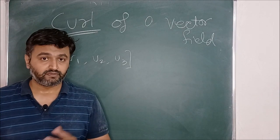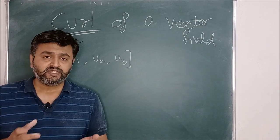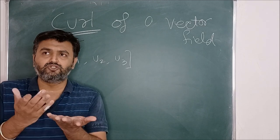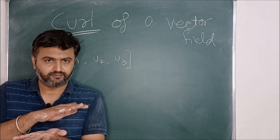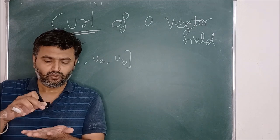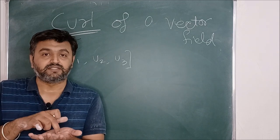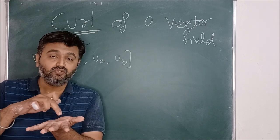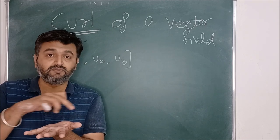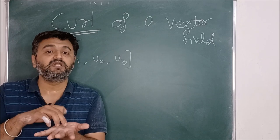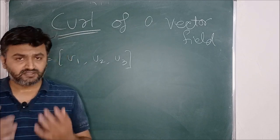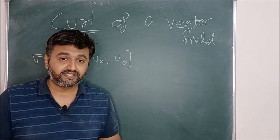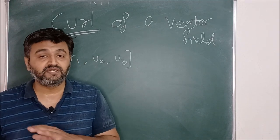So what do we mean by curl of a vector field? You can imagine a magnetic force field or the flow of a liquid. Curl represents that at a given point, how the surrounding vectors will swirl — that's what curl means, or in other words, the curl of a vector field captures the idea about how the field rotates.